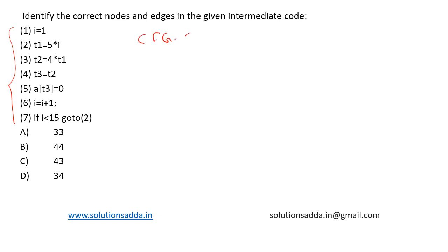A control flow graph is a representation using a graph which shows the path that might be traversed through a program during its execution—that is, paths traversed during execution.